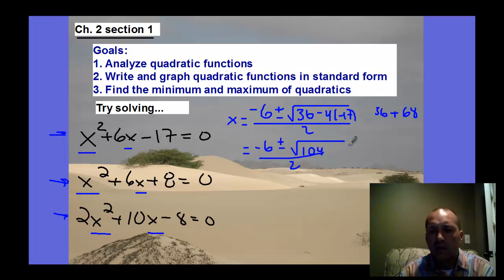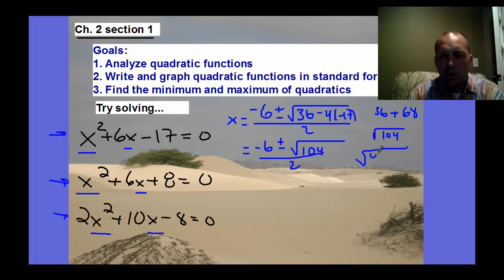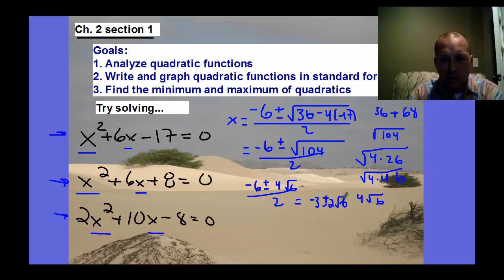And then we can try to simplify this a little bit. So if you simplify the square root of 104, I can divide that. So I know 4 goes into that. So it's the same thing as 4 times 26, and then it's the same thing as 4 times 4 times 6. So that would be 4 times root 6. So this ends up being negative 6 plus or minus 4 root 6 over 2, which then we can rewrite as, we can divide both terms by 2. You get negative 3 plus or minus 2 root 6. So that would be the final answer. That would be exact. So that's the first thing, quadratic formula.